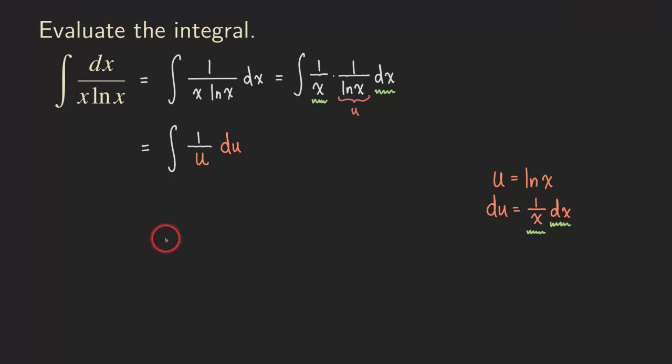So now it just becomes a simple integral, which is finding the antiderivative of 1 over u. And that's actually just the natural log of the absolute value of this u.